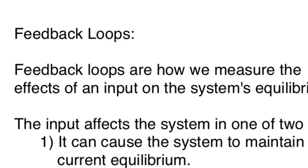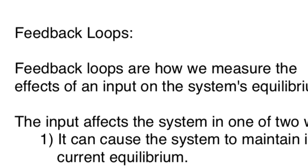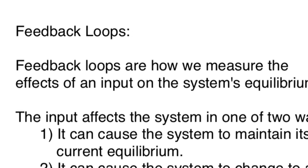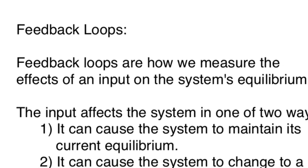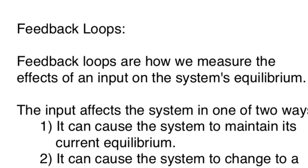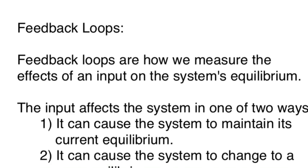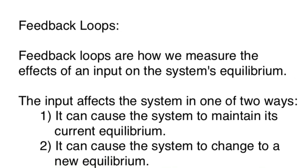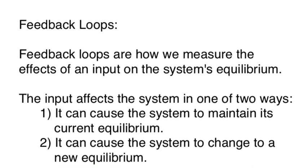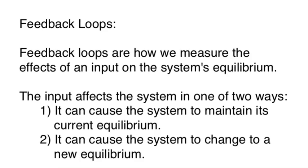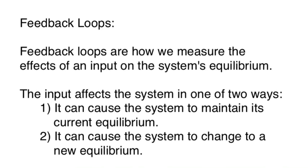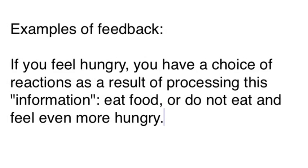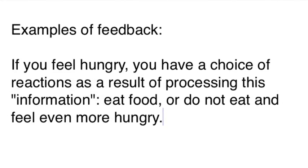What is a feedback loop? It's how we measure the effects of an input on a system's equilibrium. This input, sometimes called information, can affect the system in one of two ways: it can either cause the equilibrium of the system to be maintained, or it can cause it to shift and change.